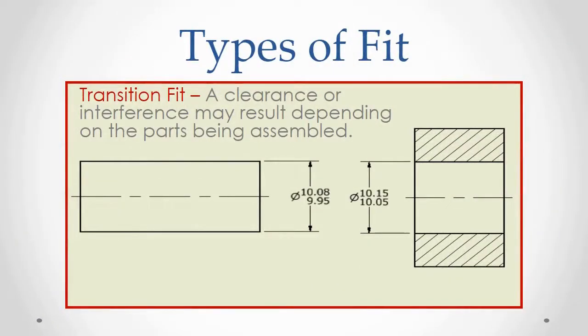In this situation, the peg could be as large as 10.08 millimeters, and the hole could be as small as 10.05 millimeters, resulting in an interference. However, the very next assembly off the production line could have a peg as small as 9.95 millimeters and a hole as large as 10.15 millimeters, resulting in a clearance. Since both of these situations are acceptable within the tolerance of the parts, that makes this a transition fit.